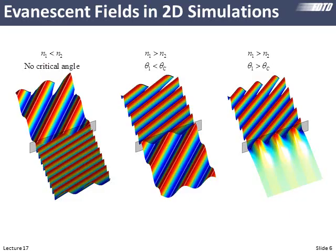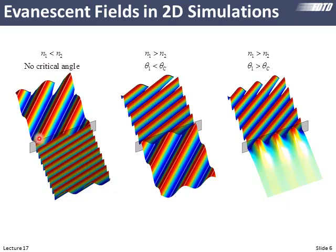Let's think about evanescent fields in two dimensions with three examples. Starting at the far left, we have the interface between a low refractive index material going into a high refractive index material. The wave fronts are more stretched out above — it's traveling faster — and compressed below where it travels slower. The fields on both sides of this interface must look the same due to boundary conditions, which describes refraction.